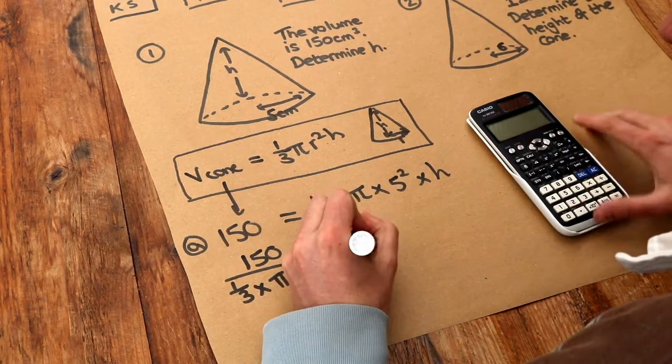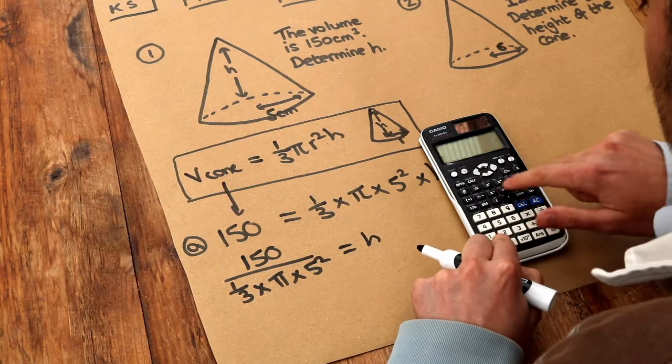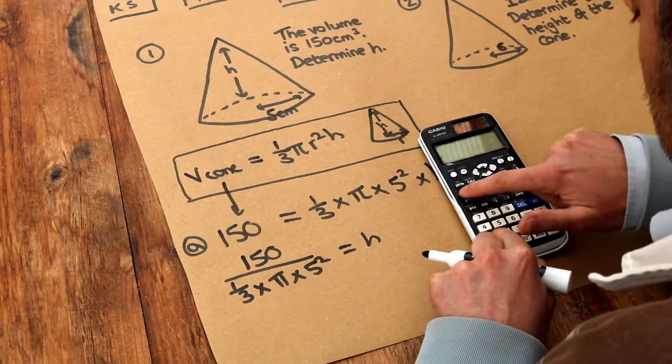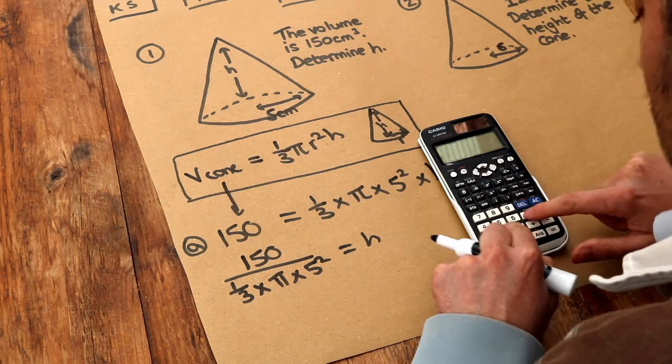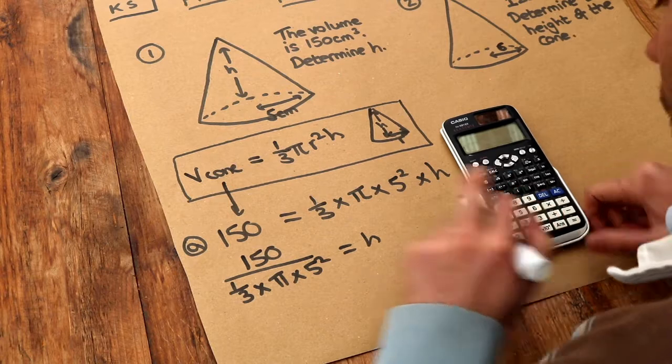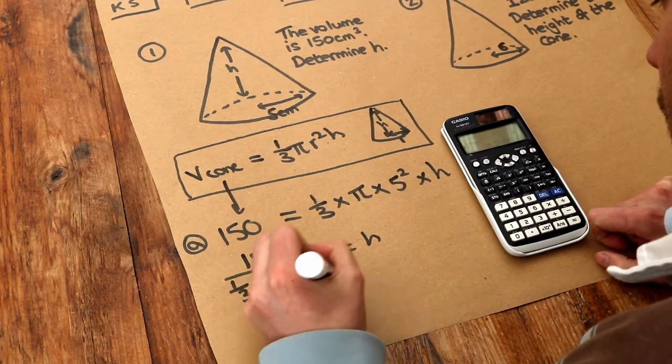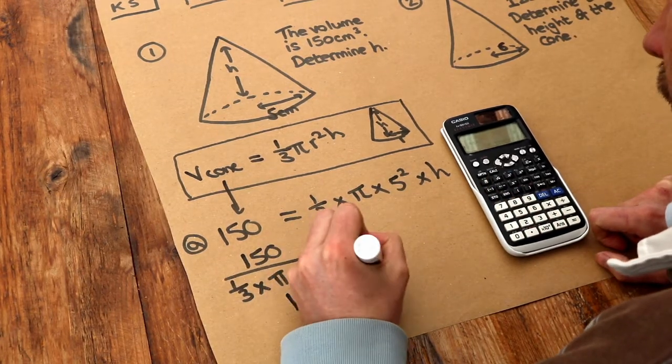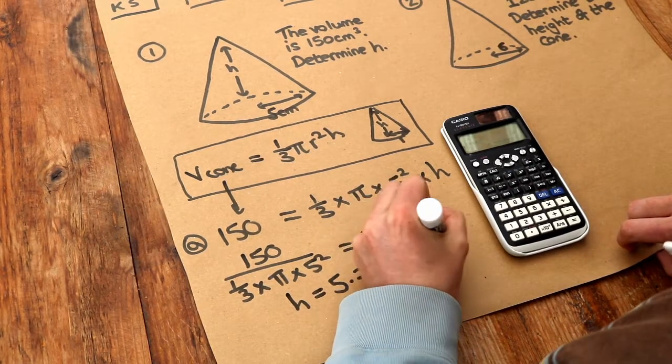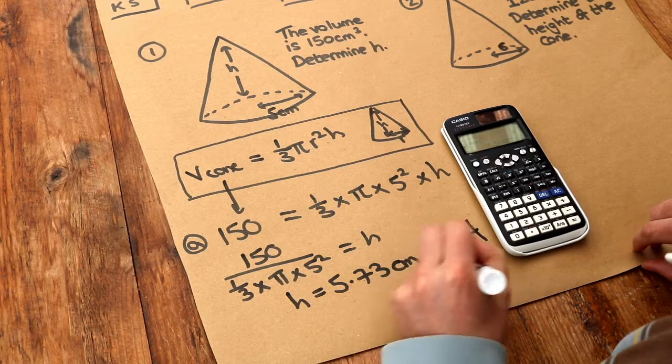that will just leave h on the right hand side. So I just need to put that into my calculator. I'm going to use a fraction key to keep all of this stuff at the bottom together, so a third times pi times five squared. And that gives me for h, 5.73 centimeters to three significant figures. So that is the final answer there.